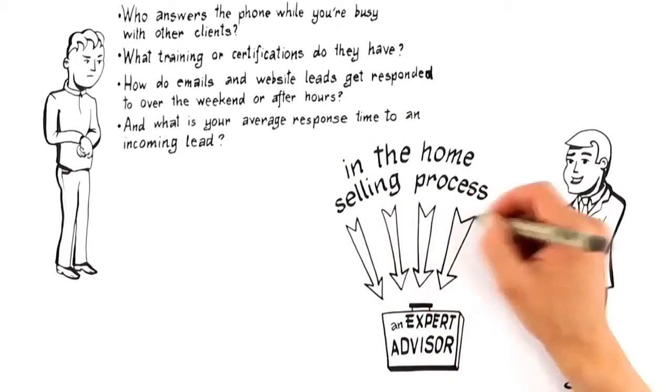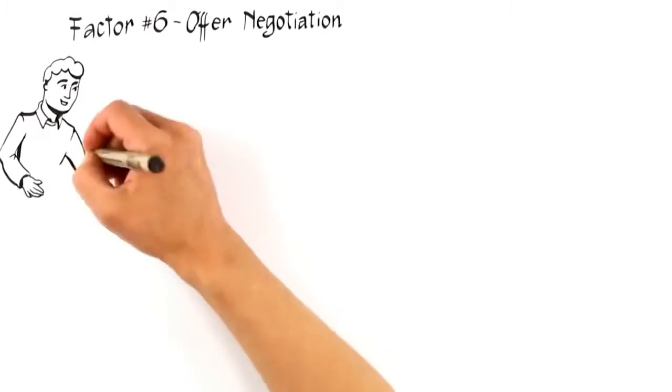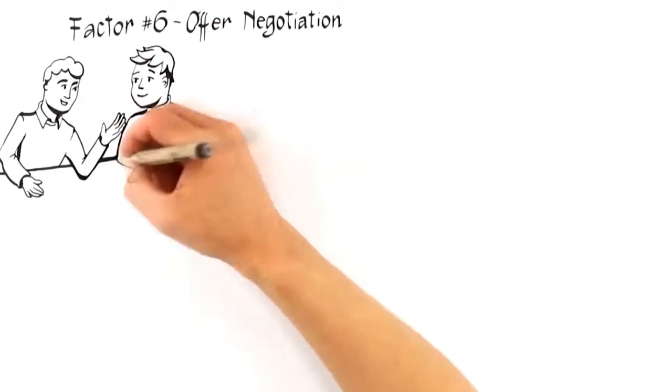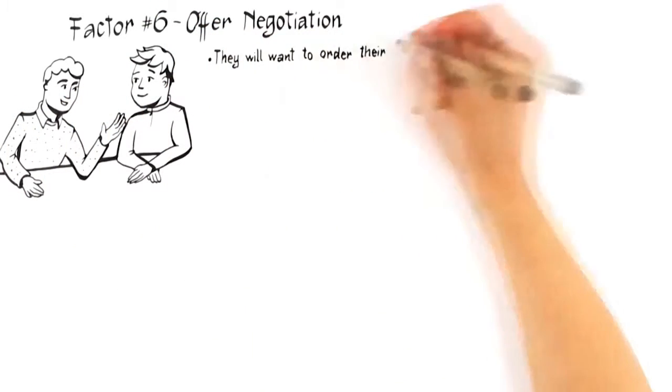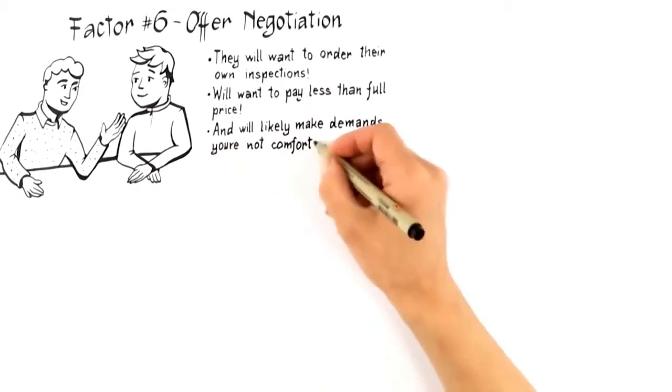Alright, the next to last factor that influences the likelihood you get top dollar for your home is factor number six, offer negotiation. Regardless of how well a home is positioned to attract the perfect buyer, they will want to order their own inspections, will want to pay less than full price, and will likely make demands you're not comfortable agreeing to.